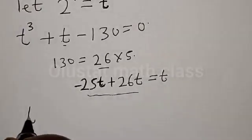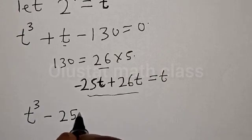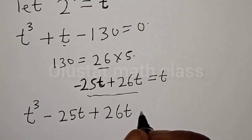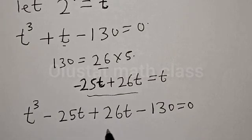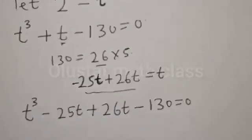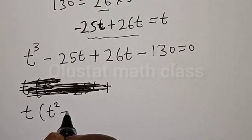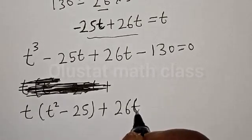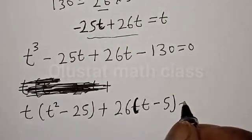We replace to get: t cubed minus 25t plus 26t minus 130 is equal to zero. This does not change the equation because minus 25t plus 26t gives the same t. Now let's factorize: t into t squared minus 25, plus 26 into t minus 5, equal to zero.